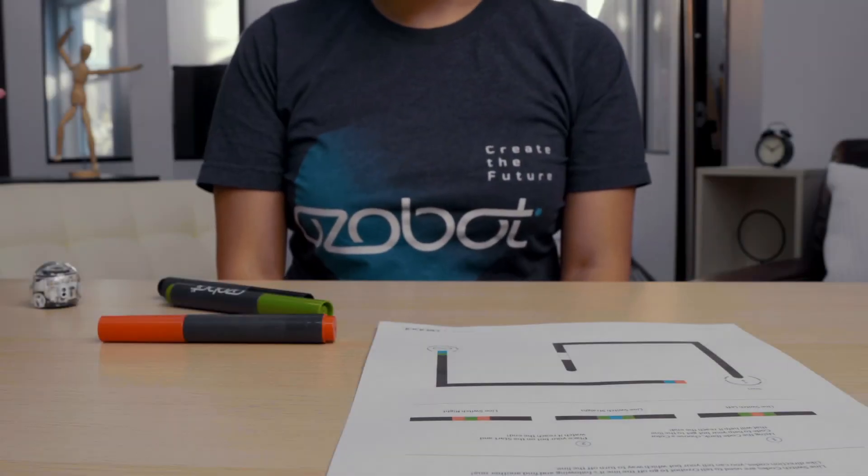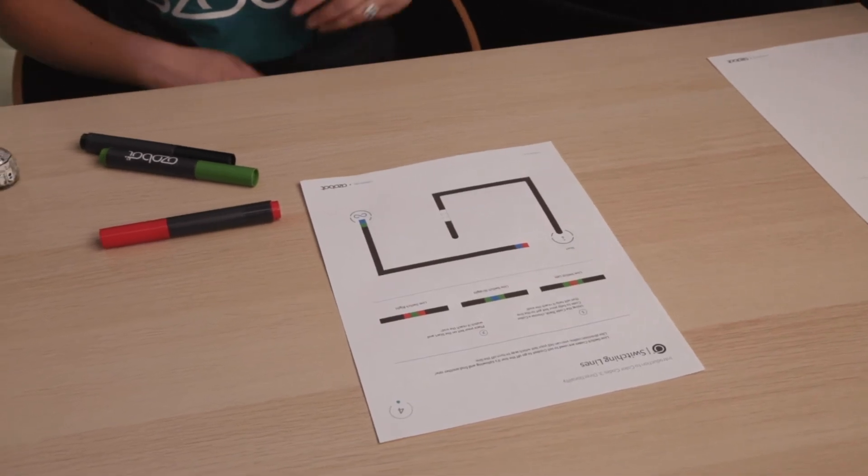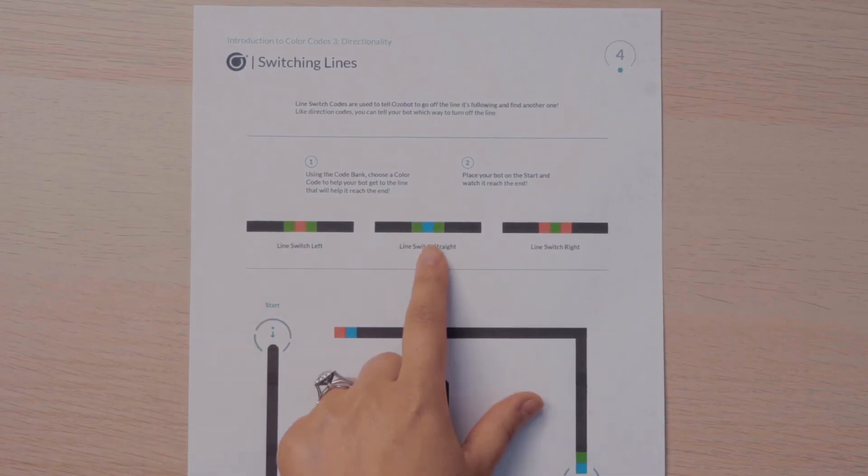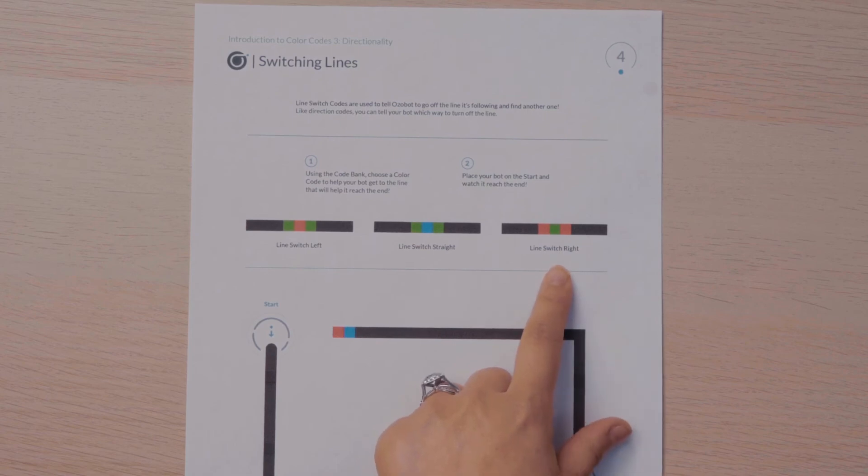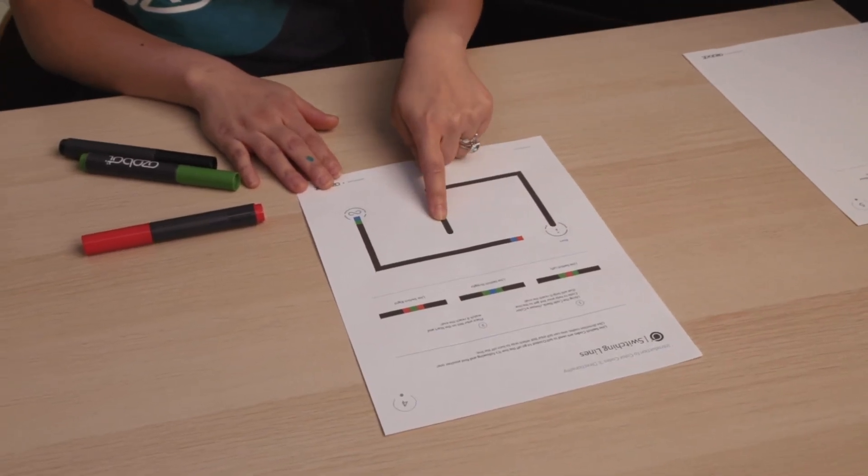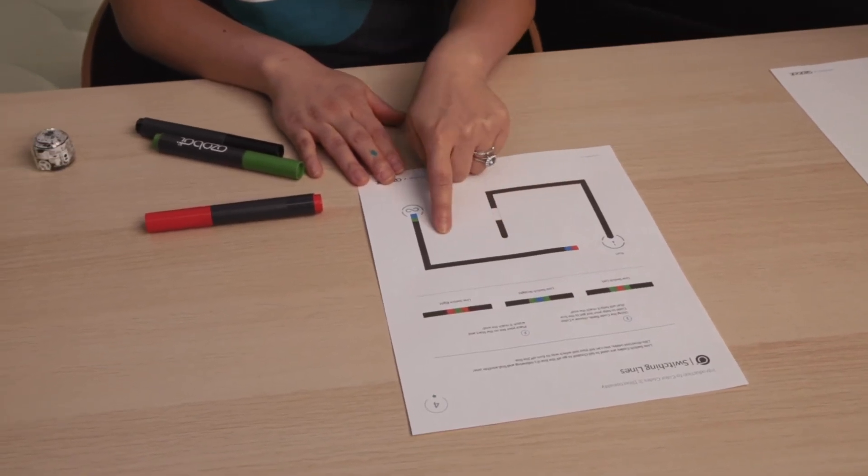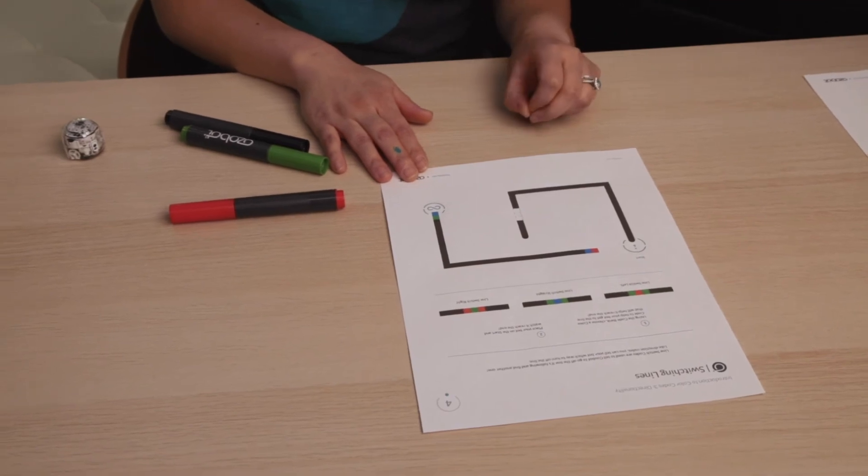We have one more skill to learn. We are going to learn all about the line switch codes: Line switch left, line switch straight, and line switch right. The bot will travel along this line, read the color code, and either turn left, go straight, or turn right and look for a new line to follow.